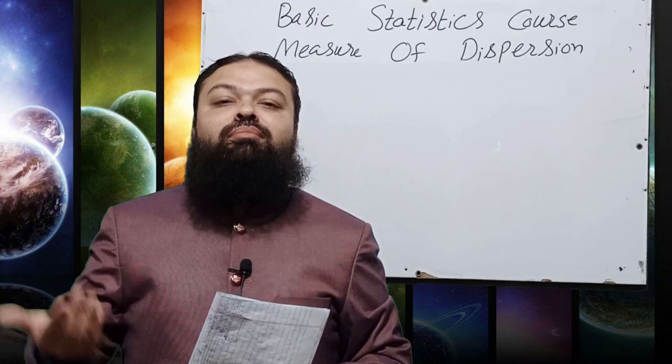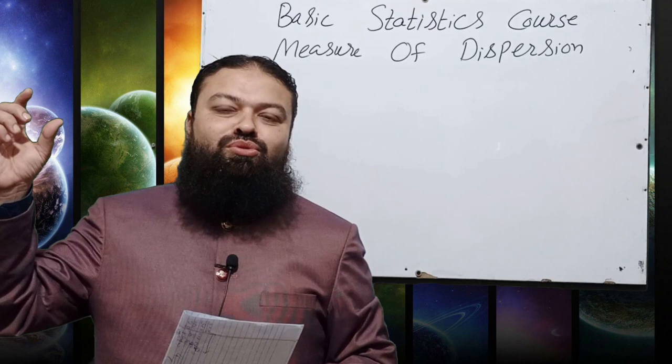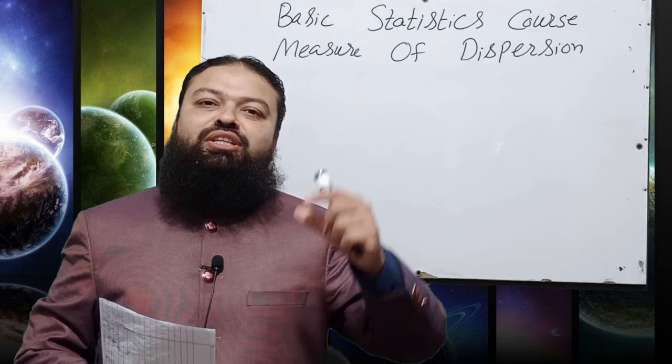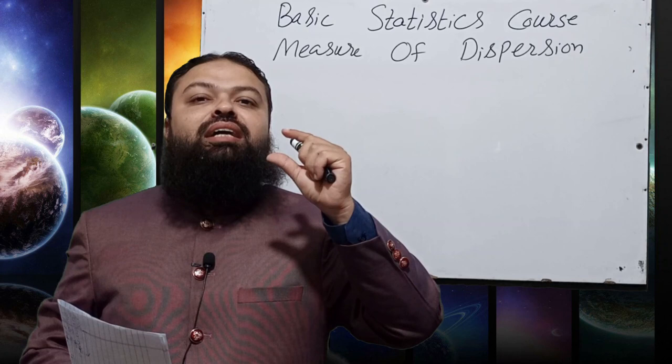Then we discussed the drawback of range — it is based on extreme values: range equals maximum minus minimum. We also discussed that in a symmetric distribution, Q3 minus Q2 equals Q2 minus Q1, which means Q2 equals (Q1 + Q3) / 2.